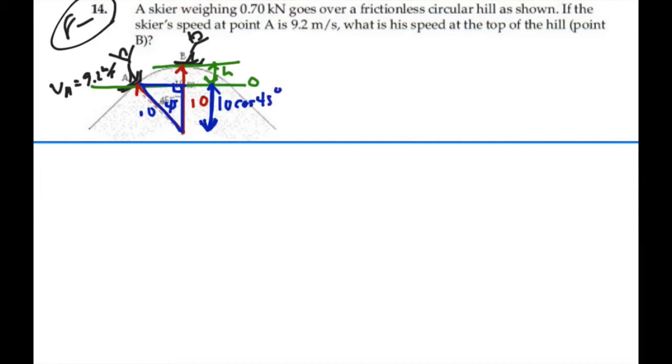So this side of that triangle is going to be 10 cosine 45 degrees. So I know that my height H is going to be equal to the full radius of 10 minus the distance of this side which is 10 cosine 45 degrees.